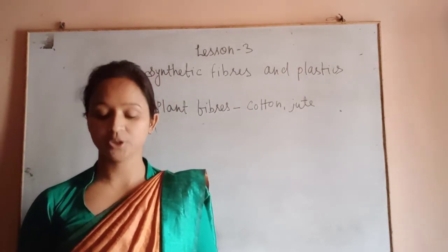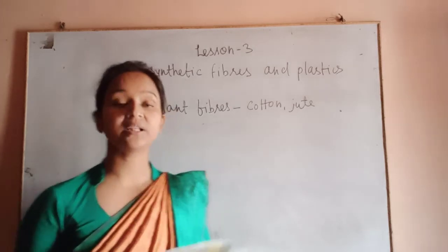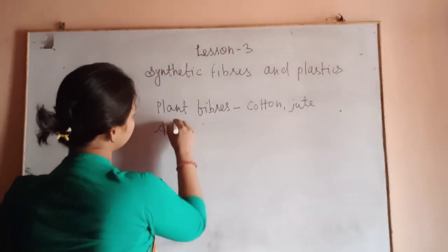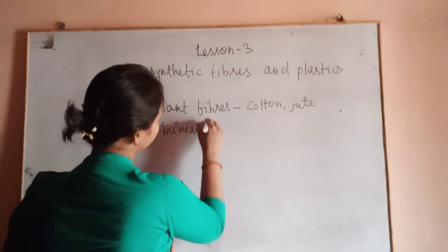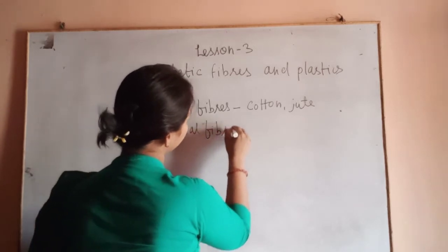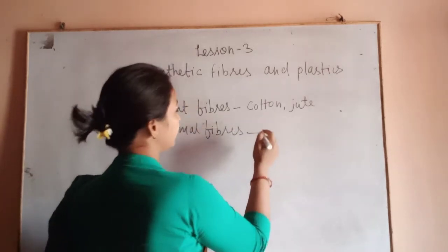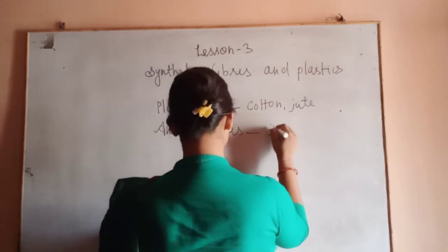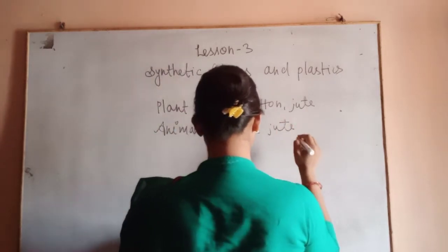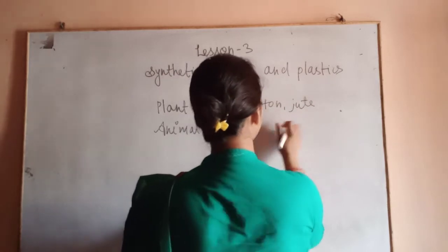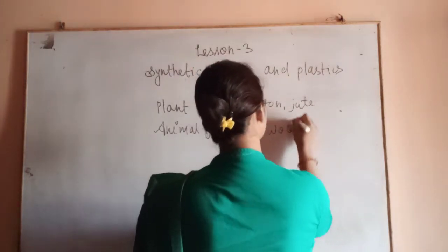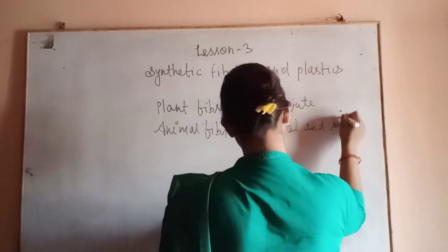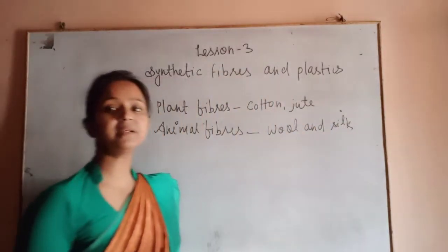In class 7 we have learnt about wool, and wool and silk are called the animal fibers.